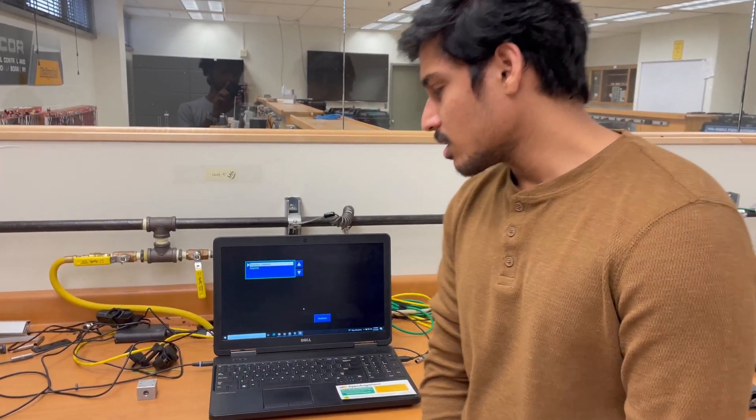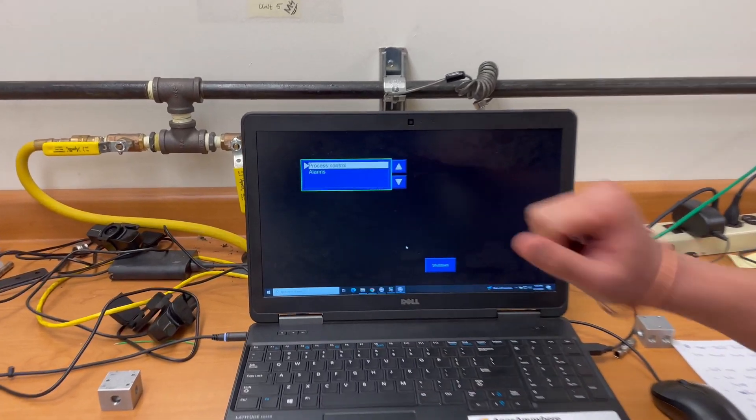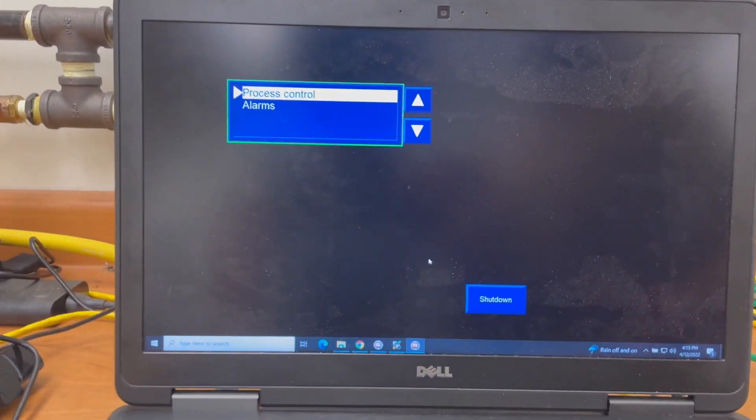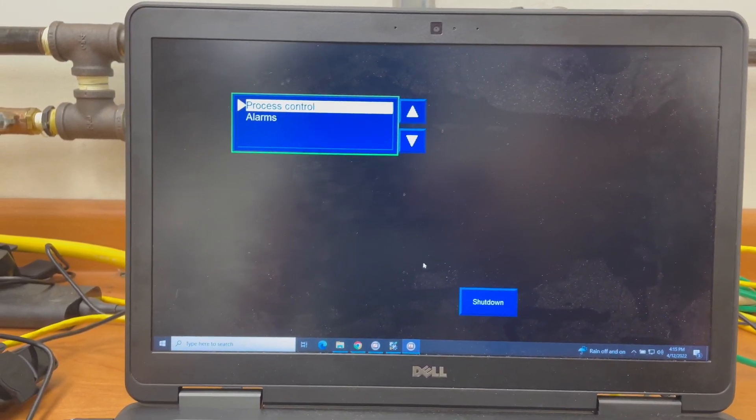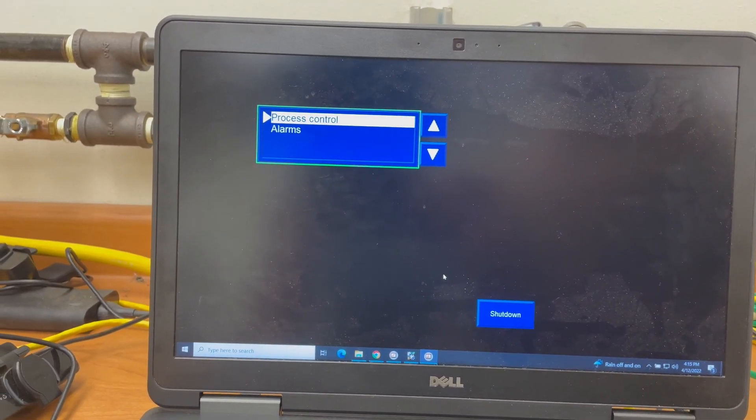I will be explaining about the working process of the mechatronics station. Here we will be using this laptop as an HMI panel. Here we have two different tabs. One is process control and other is alarm. So let me enter into the process control.